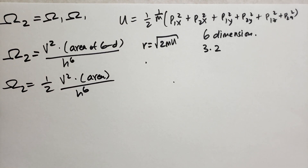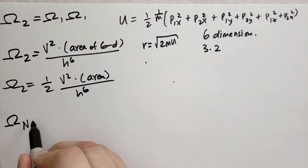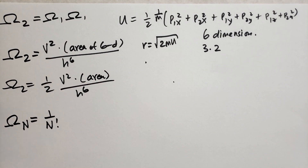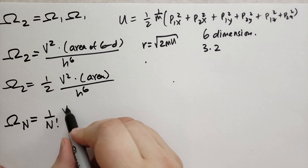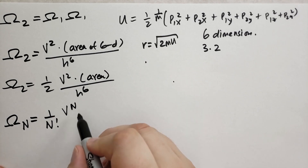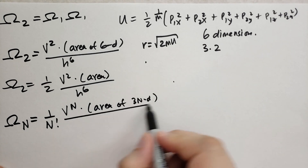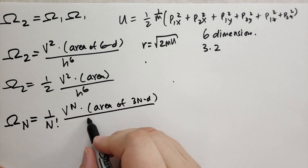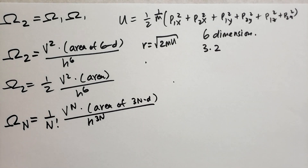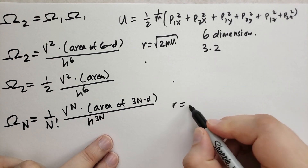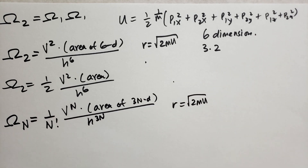When we move up to N particles, we're going to find that it's 1/N! — because if you have N particles there are N! combinations, different ways of ordering those particles. Then we have V^N times the area of a 3N-dimensional hypersphere, all divided by h^(3N). The radius of this hypersphere is still the square root of 2mU.